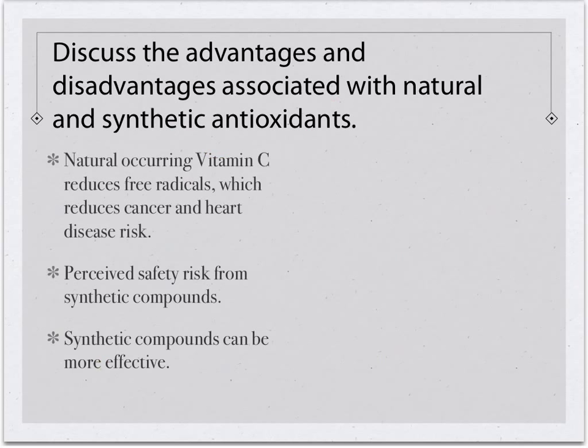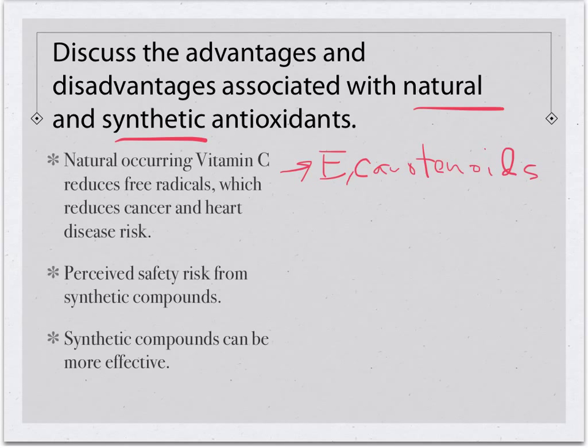Looking at the advantages and disadvantages of natural versus synthetic antioxidants: naturally occurring antioxidants — vitamin C, vitamin E, carotenoids — work mainly by reducing the formation of free radicals. They bond in ways that prevent free radicals from forming, which can reduce the rates of cancer and heart disease, since free radicals are very reactive and can attack tissue.